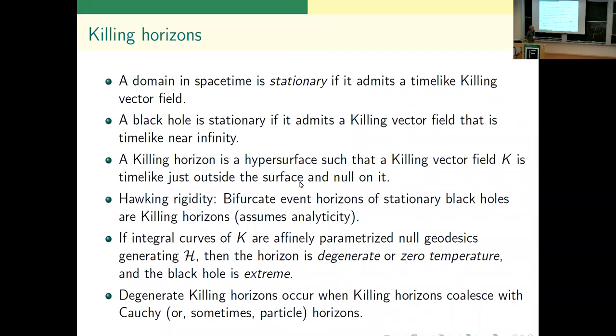So killing horizons and degenerate killing horizons, which is where I want to go. Domain of outer communications is stationary - we've said what that means, a time-like killing vector field, not necessarily hypersurface orthogonal, a rotating black hole if you will. So what's the killing horizon? We've mentioned that before. That's a place where the killing horizon is time-like just outside that horizon and null on the horizon. So it changes its nature.